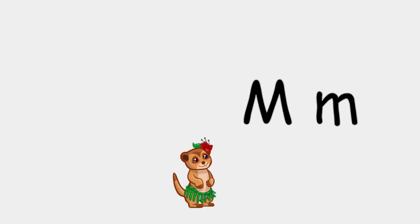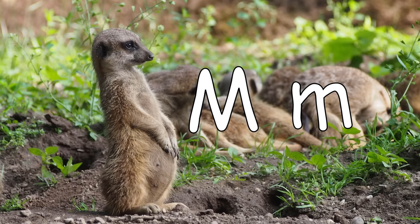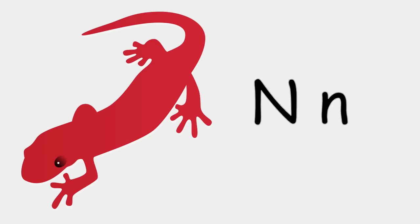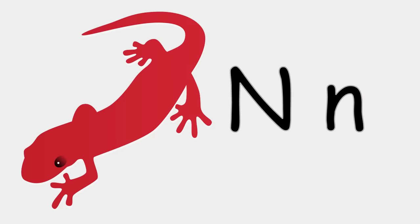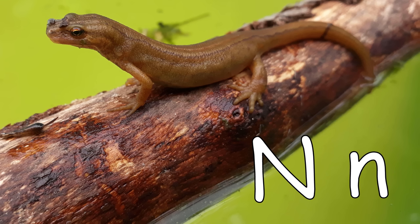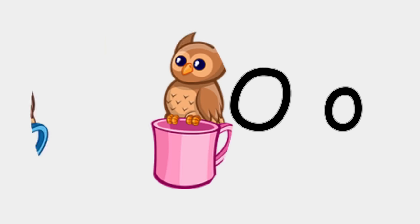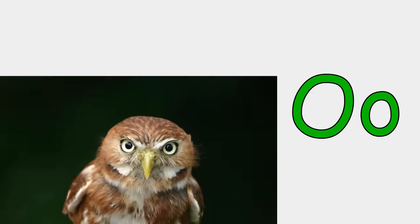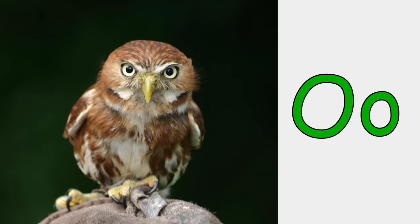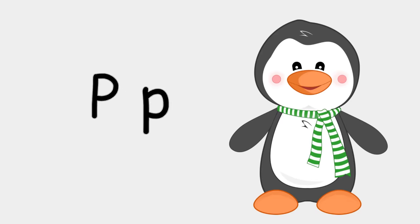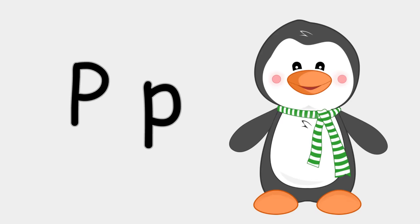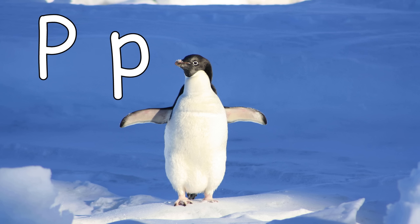M is for meerkat. M, meerkat. N is for newt. N, newt. O is for owl. A, owl. P is for penguin. P, penguin.